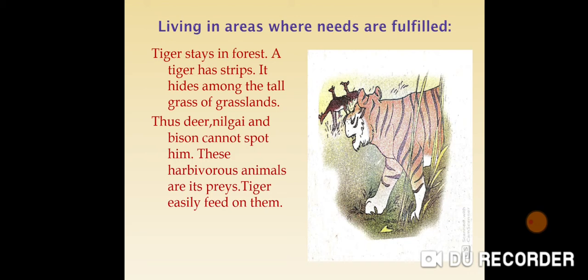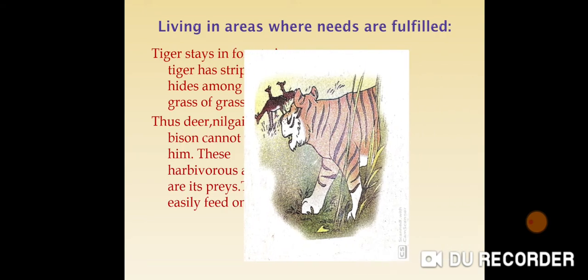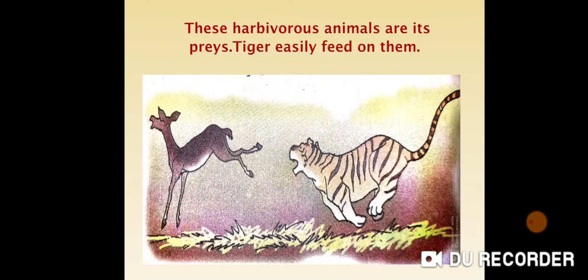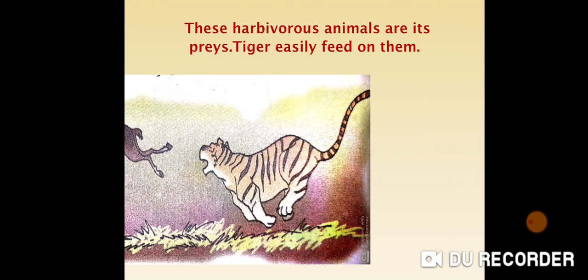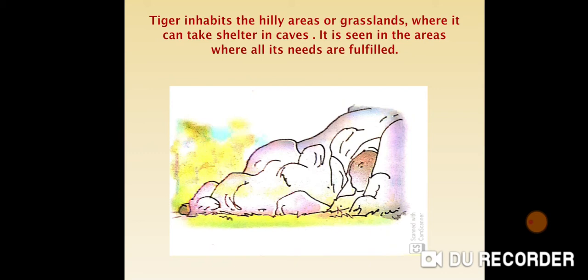Now we see the point: living in areas where needs are fulfilled. Children, do you know the animal tiger? Tiger stays in a forest. A tiger has stripes and hides among the tall grass and grasslands, so deer, nilgai and bison cannot spot it. These herbivorous animals are its prey and the tiger easily feeds on them. See this picture — the deer is running fast and the tiger tries to catch it. The tiger inhabits hilly areas or grasslands where it can take shelter in caves. It is seen in areas where all its needs are fulfilled.